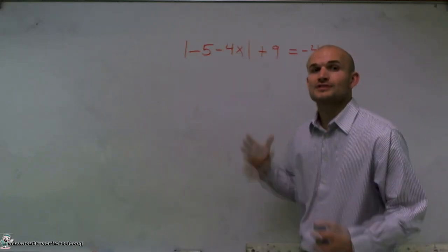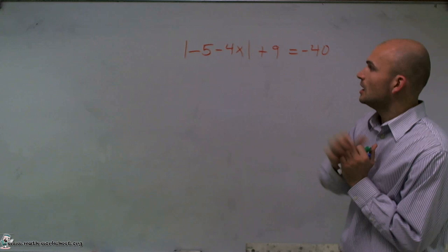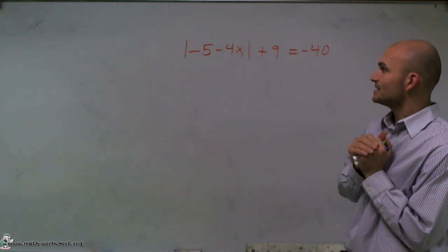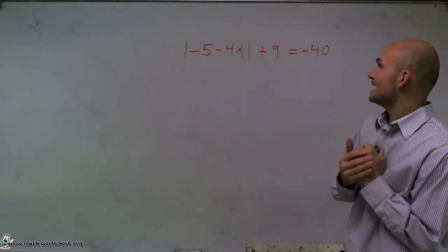OK, welcome. What I want to do is show you how to solve this absolute value equation. Absolute value of negative 5 minus 4x plus 9 equals negative 40.